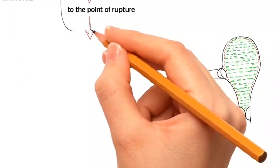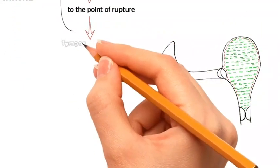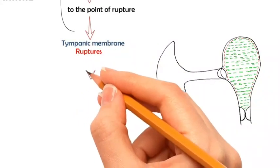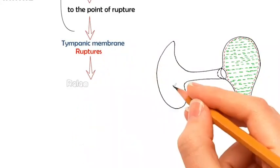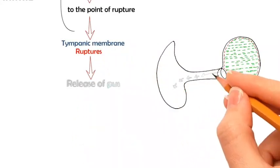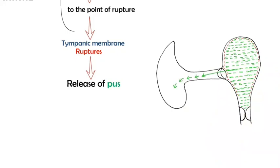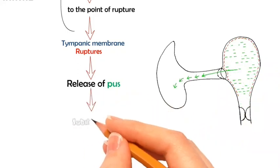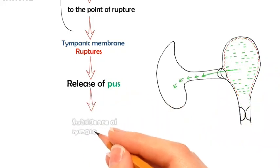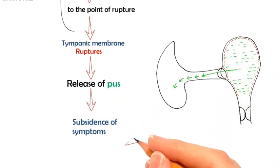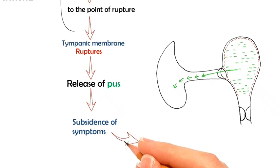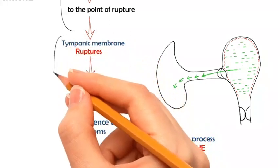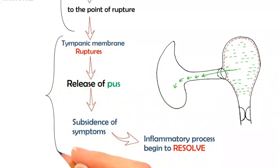The tympanic membrane finally ruptures, releasing pus into the external auditory canal. The symptoms subside and the inflammation starts to resolve in the stage of resolution.